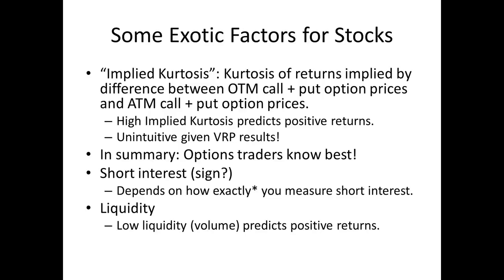In summary, these three factors — variance risk premium, implied skew, and implied kurtosis — are all based on option prices. They tell us that options traders know best. Another factor that has nothing to do with options is short interest. The question is: does high short interest produce high expected return or low expected return? That depends on exactly how you measure short interest.